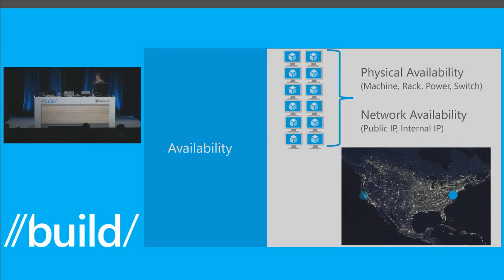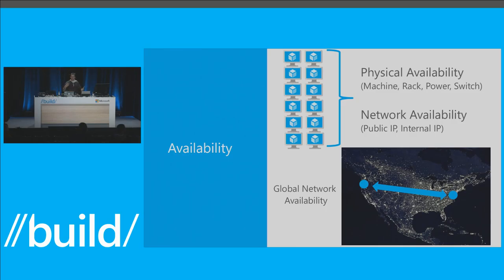From a global availability perspective, having that availability span the entire globe — being able to bounce traffic from West US to East US based on demand, customer proximity, and downtime issues in the platform or in your app. Very important to have that all automated.